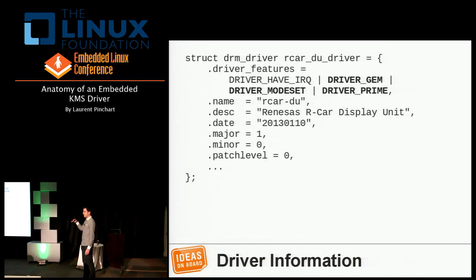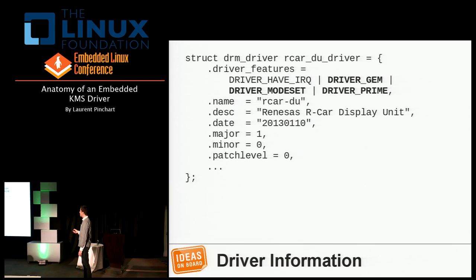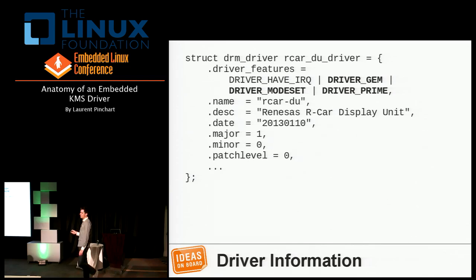The drm_driver structure has lots of fields. There's a flags field used to tell the DRM core what your driver needs and can do: your driver probably needs an interrupt, you want to tell it uses the GEM memory manager, that it can do mode setting — not a legacy driver with userspace hardware access — and that it uses the PRIME API, which allows sharing buffers between different applications and different drivers.